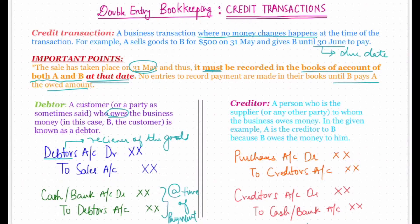A creditor is a person who is the supplier or any other party to whom the business owes money. With the debtor, it was who owes the business money; with the creditor, it is a person the business owes money to. In the given example, A will be the creditor to B because B owes the money to him.